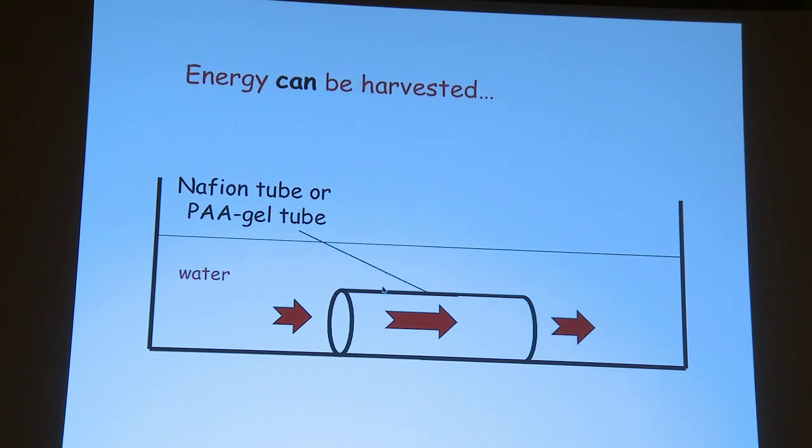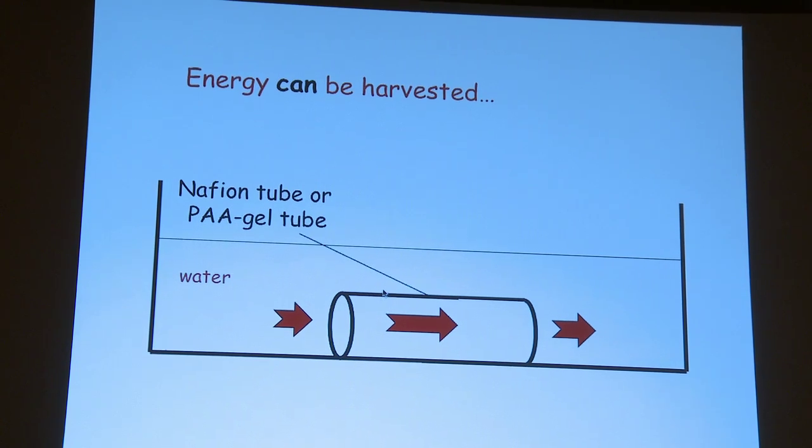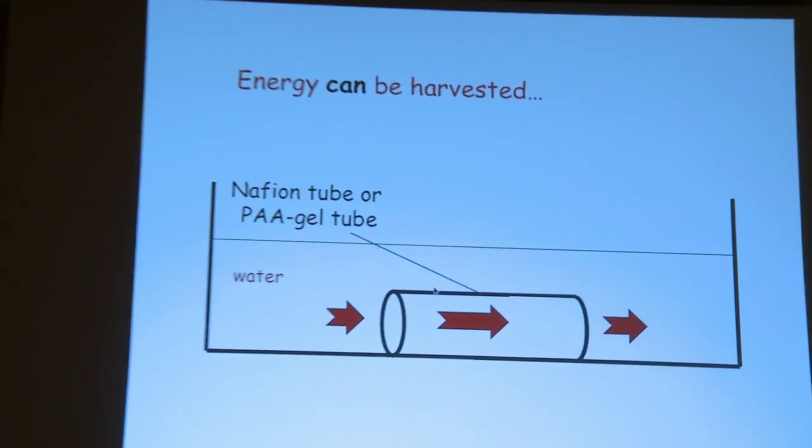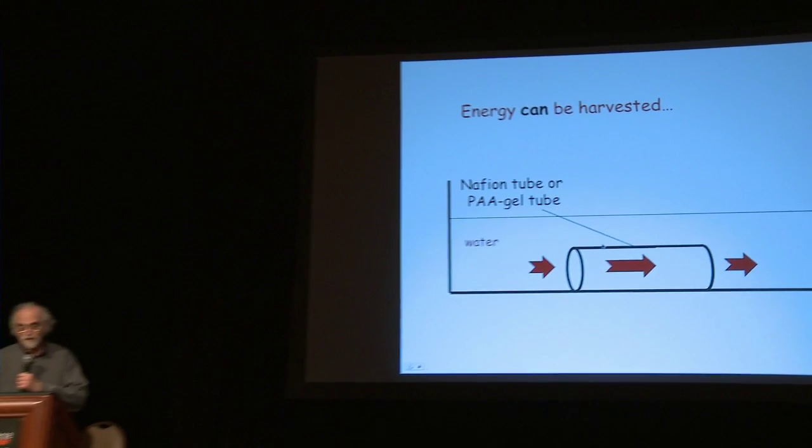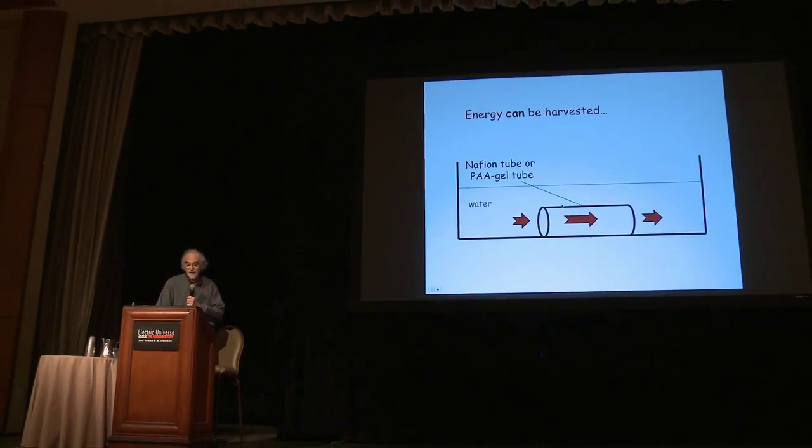What we found is incessant flow through the tube. Now that's not supposed to happen because it requires energy to drive it through because water has viscosity, so it can't just happen unless we have a perpetual motion machine. Some energy needs to be coming in.